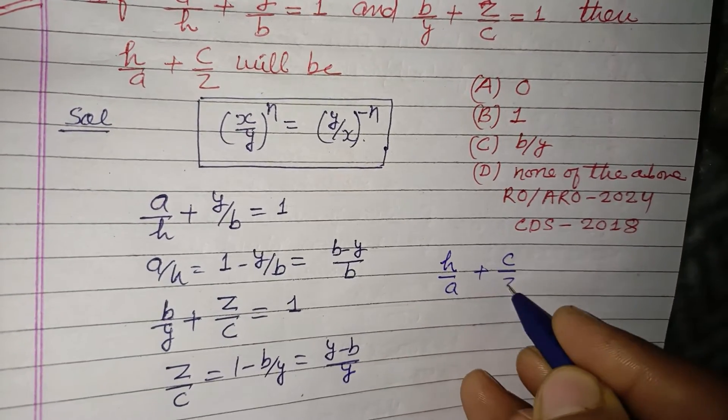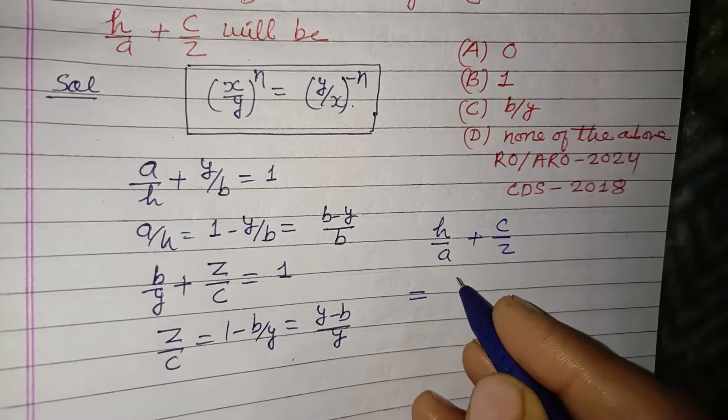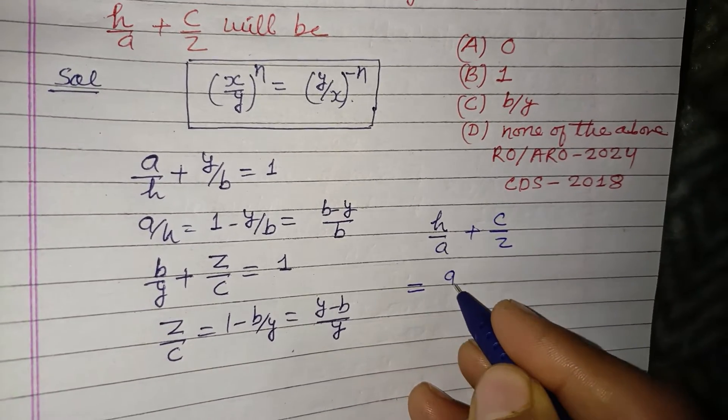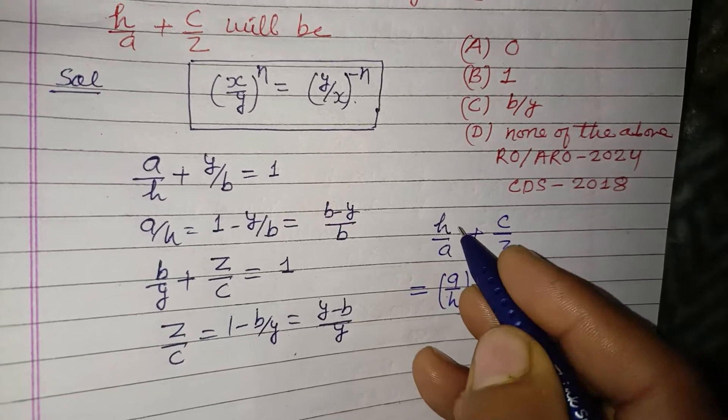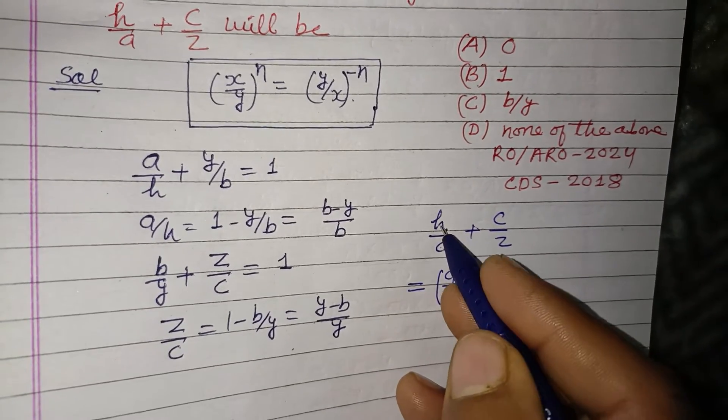Plus (c/z)^(-1), which is (z/c)^(-1). Here we put the value of a/h.